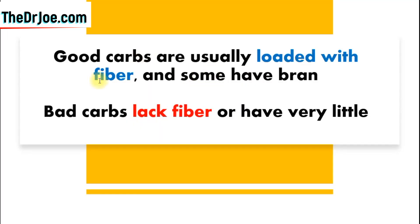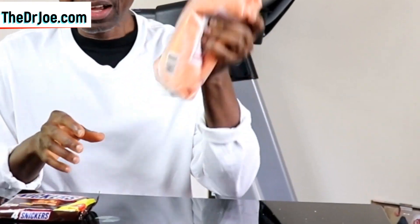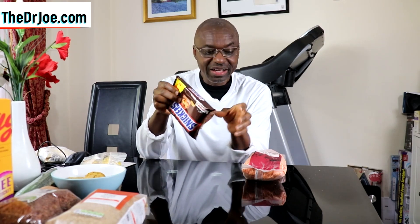Good carbs are usually loaded with fiber, and some have bran. Bad carbs, on the other hand, lack fiber, or when they do have fiber they have very little. That's another distinguishing feature between good carbs and bad carbs — the presence and quantity of fiber. These are red lentils: they are fiber-rich, good carbs. On the other hand, here we have chocolate — hardly any fiber, fiber poor — so this is a bad carb.